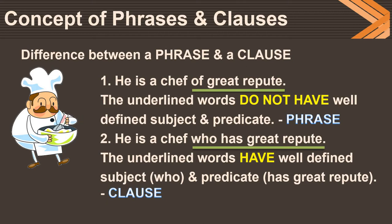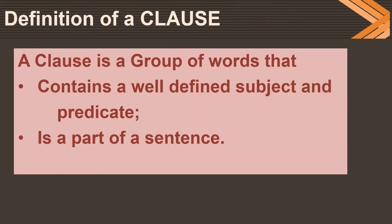We conclude that a phrase does not have a well-defined subject and predicate. But a clause is a group of words that consists of a well-defined subject and a predicate. The definition of a clause is a group of words that contains a well-defined subject and predicate, and it is also a part of a sentence.